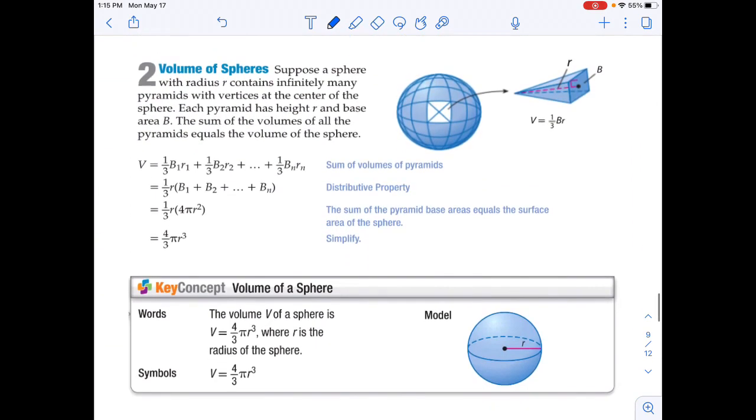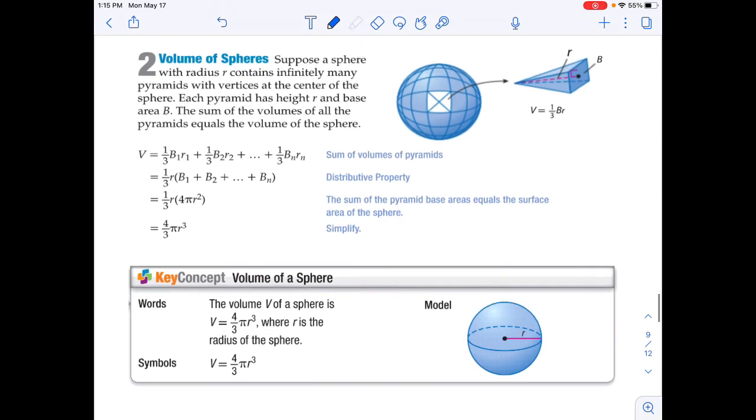Now the volume of spheres. Suppose a sphere with radius r contains infinitely many pyramids with vertices at the center of the sphere. Each pyramid has height r and base area b. The sum of the volumes of all the pyramids equals the volume of the sphere. Therefore, our equation for the volume of the sphere is equal to 4/3 πr³. Notice the area idea, that πr² thing that we just did before, will not work because it's πr³. One thing I do want to point out though is that you could actually write this 4πr³ divided by 3. That's totally valid.